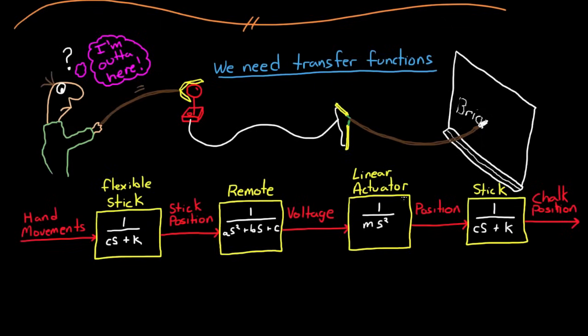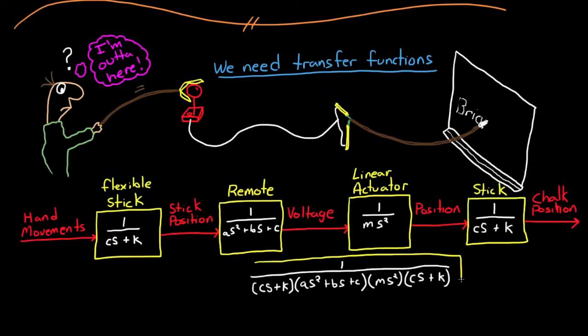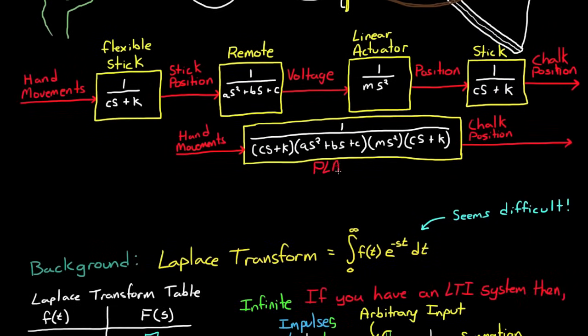So now what would have been a near impossible set of integrals if we had tried to do this in the time domain with convolution, combining these transfer functions in the s domain is as simple as multiplying them all together. And the result is the transfer function of the entire plant, where the input into the plant is your hand motion still and the output is the chalk position. So hopefully you can see how important transfer functions are to modeling a control system. In the lectures on frequency response and open-loop and closed-loop performance, you'll see that there are many other ways we use transfer functions.